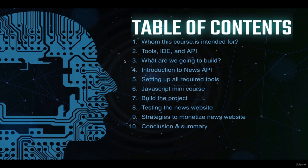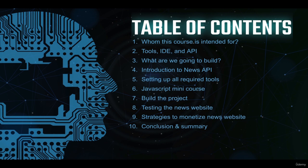Chapter three covers what we're going to build — you'll get a general overview of what our news website looks like and what features it will have. Hopefully by the end of that chapter, you'll be a little more excited knowing what we're building. Chapter four is the introduction to News API. I'll tell you what News API is commonly used for, how to access it, and its pricing — which is going to be completely free. For those of you already familiar with News API, feel free to skip that chapter.